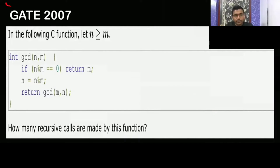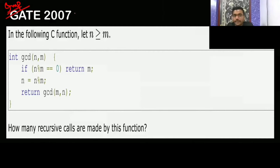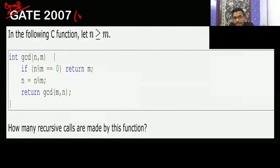This is one of the difficult and very important questions. Seriously speaking, it is a very difficult question. So take your time to give the answer. In the following C function, where n is greater than or equal to m, this function is finding the GCD. How many recursive calls are made by this function?